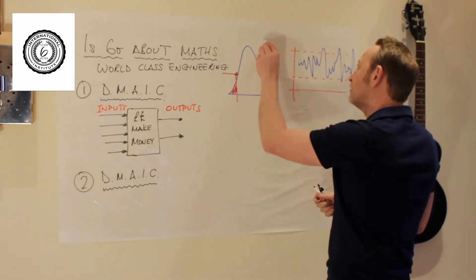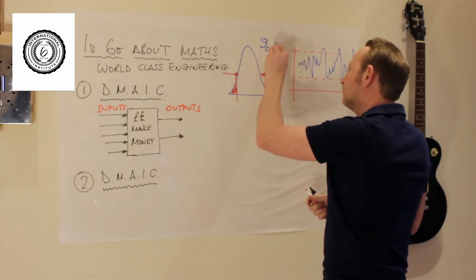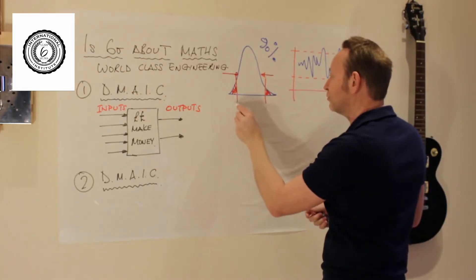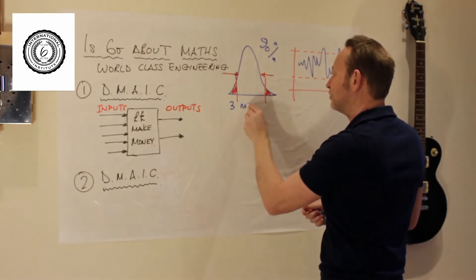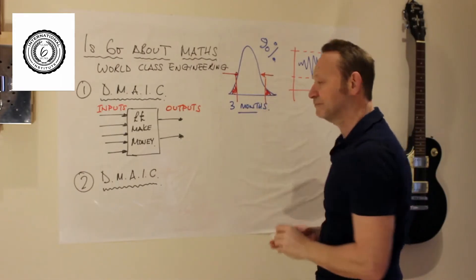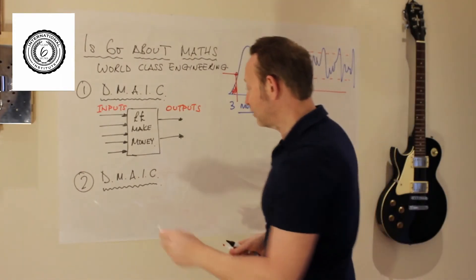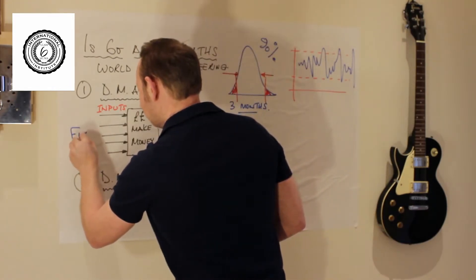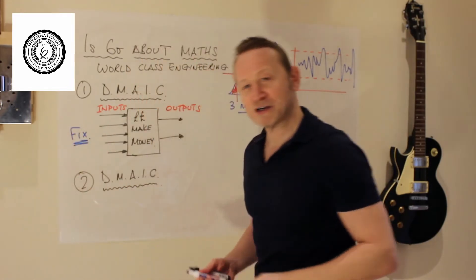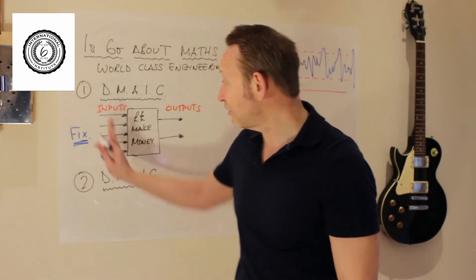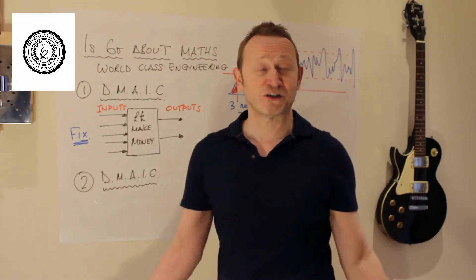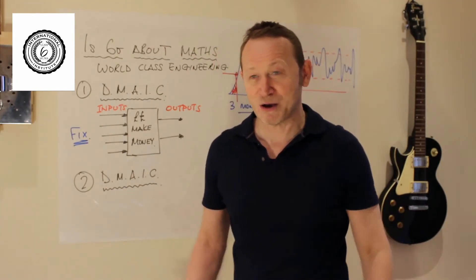They say 90% of your problems are like this and it will take you three months to fix this problem. What are we going to do? We are going to fix the input variables on this side of the process and we are going to use the laws of physics to our advantage.